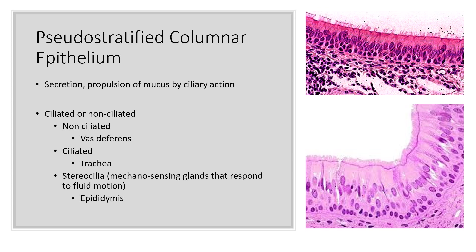There's also stereocilia, which is just a mechanosensing structure that responds to fluid motion. You can find this in the male epididymis, which is where sperm is stored after it has been nourished and produced in the testes.